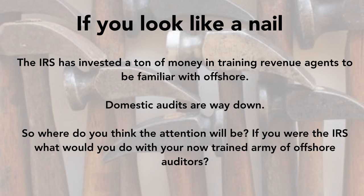The IRS is investing a ton of money training revenue agents to be familiar with offshore accounts. Right now, domestic audits are way down — a lot of agents are working on OVDPs. But at some point, we'll reach peak OVDP and fewer and fewer people will be coming through. What is the IRS going to do with all these revenue agents who are expertly trained with years of experience in foreign financial products? They're not going to send them to audit construction workers. The IRS is going to take its army of highly trained offshore auditors and set them loose on people they suspect. They've identified something like 10,000 people who likely made soft disclosures and haven't even started getting to them — and the statute of limitations still gives them a lot of time.